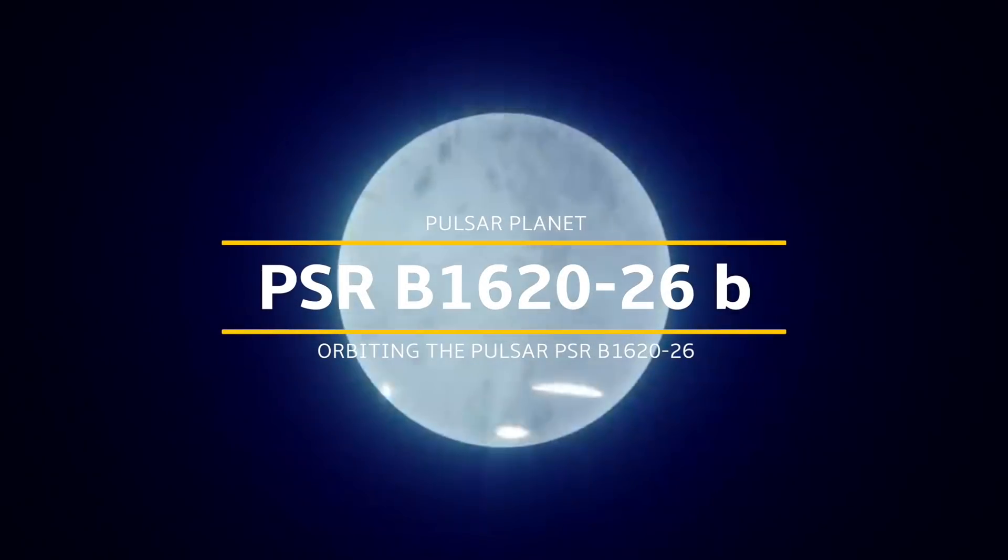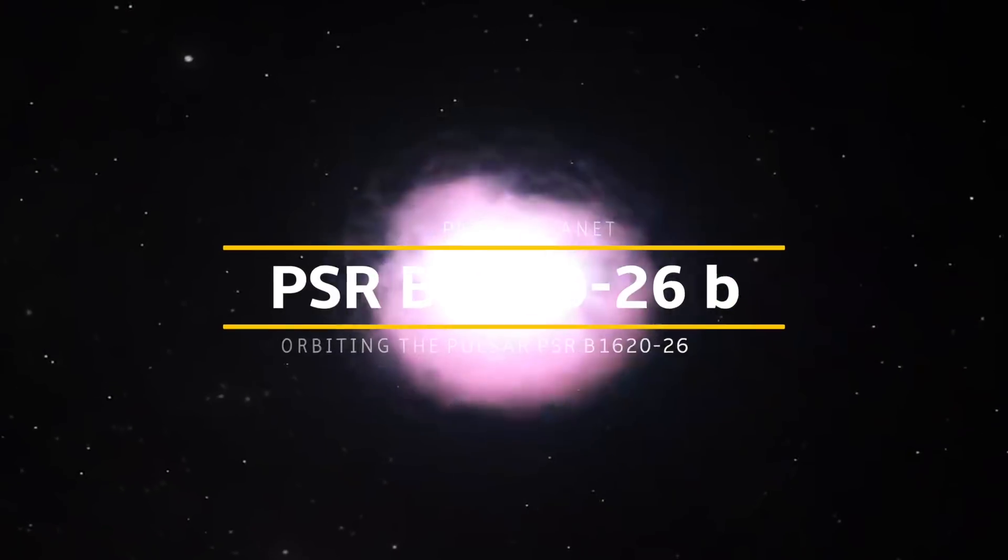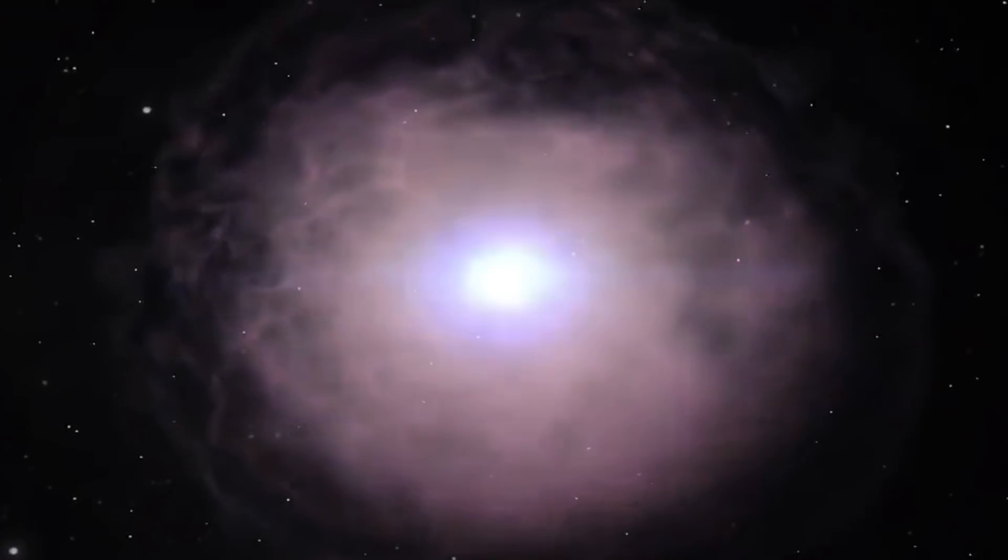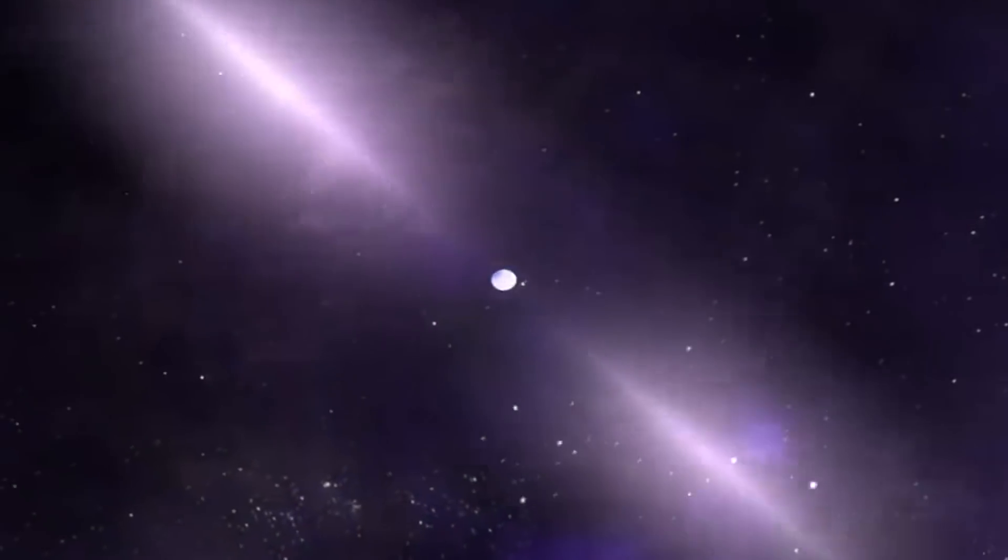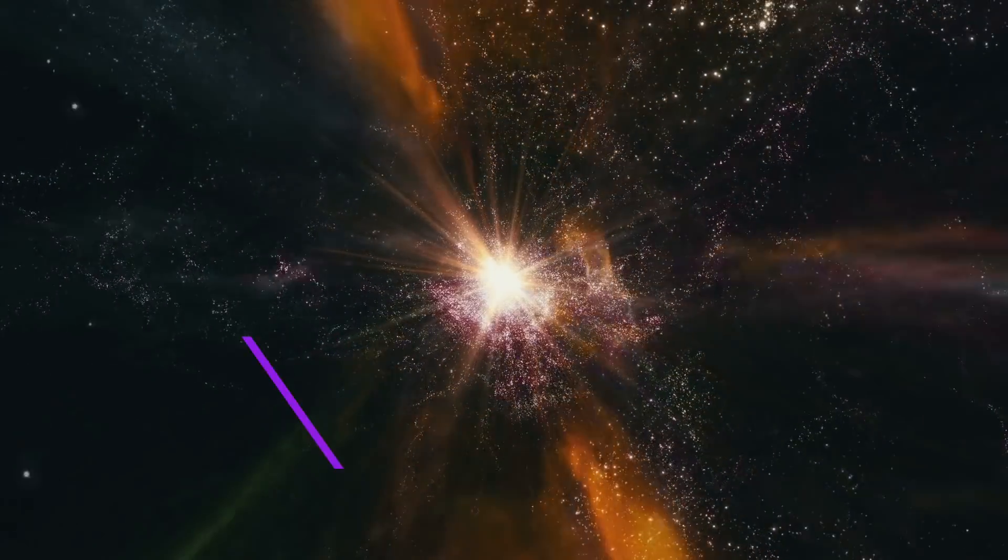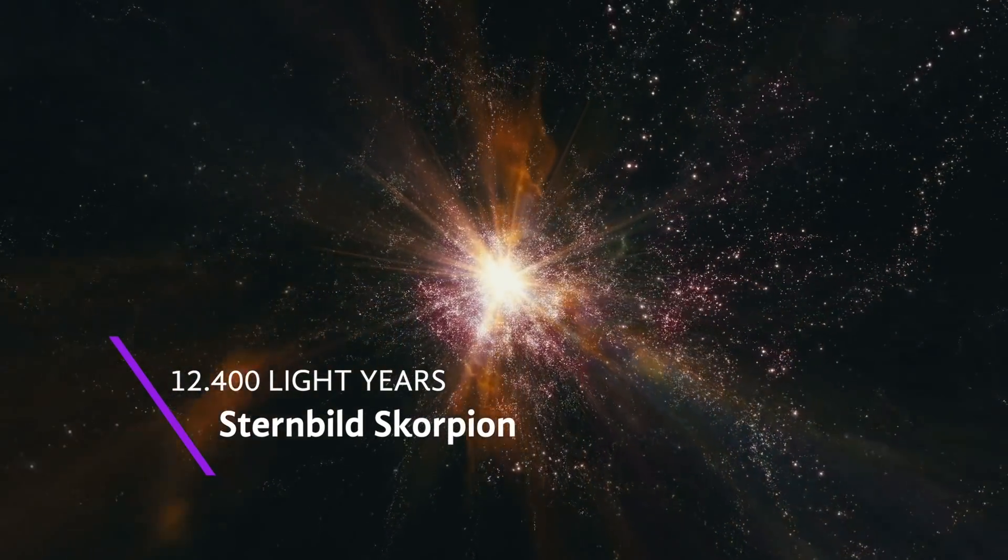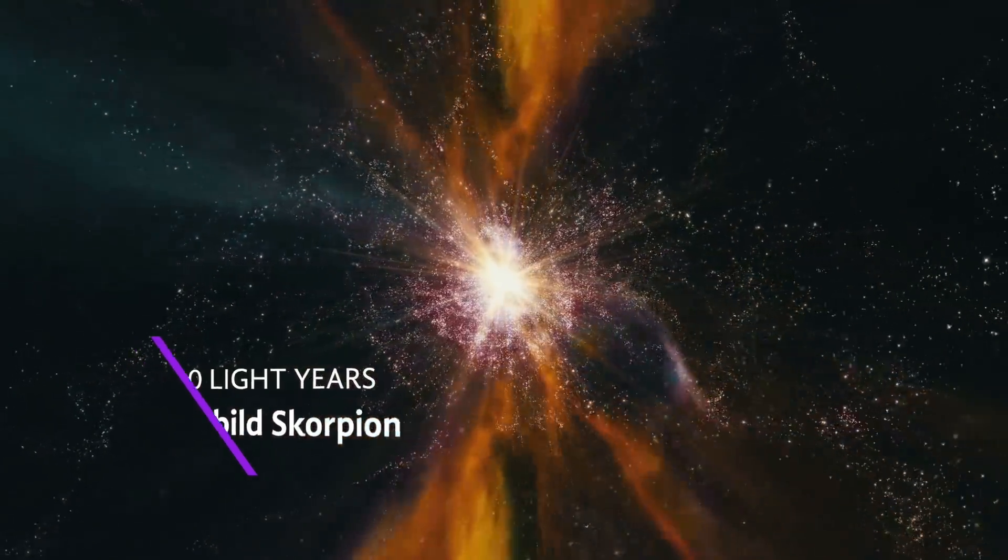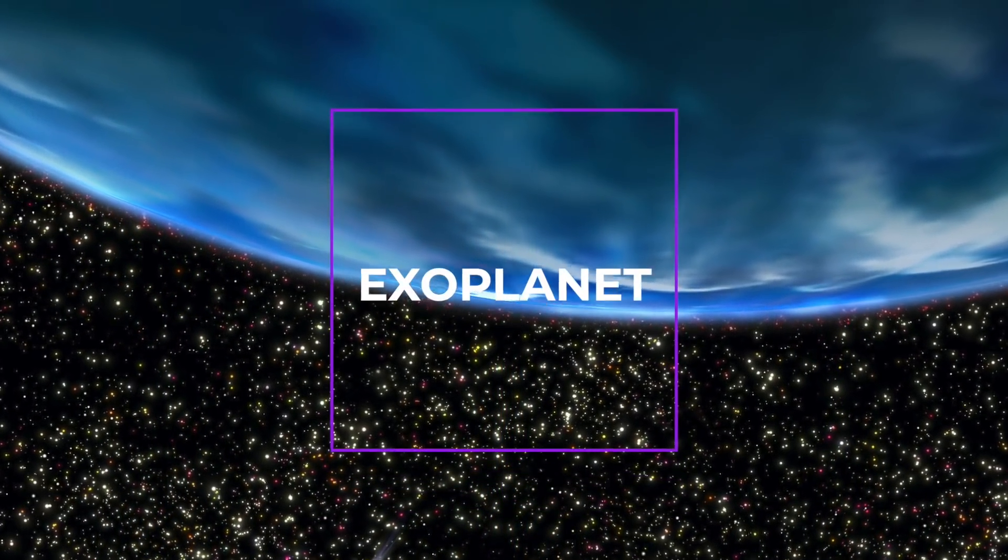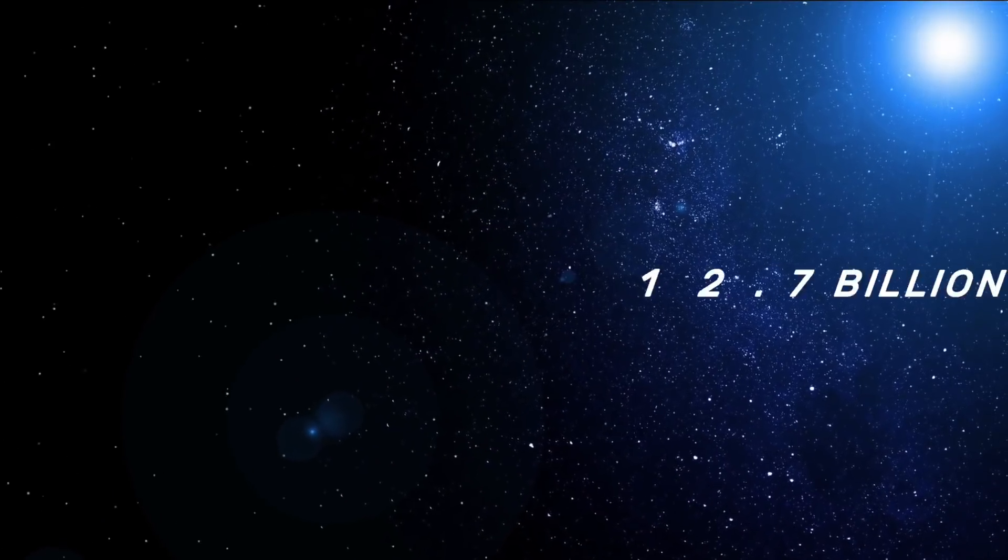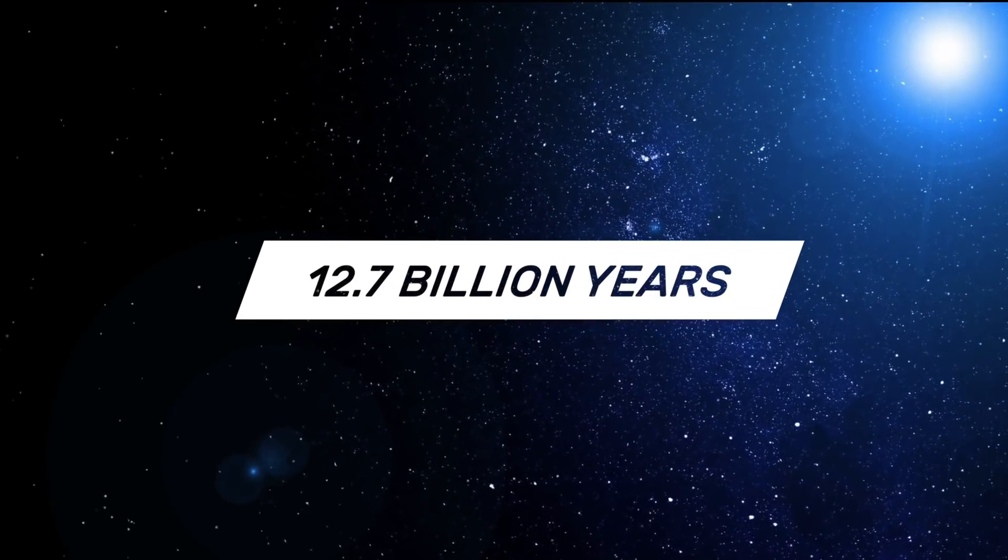PSR B1620-26b is a pulsar planet orbiting the pulsar PSR B1620-26 in the globular cluster Messier 4. It is located about 12,400 light years away in the constellation Scorpio. In addition, the exoplanet is the oldest existing and known exoplanet because it is assumed to be 12.7 billion years old.